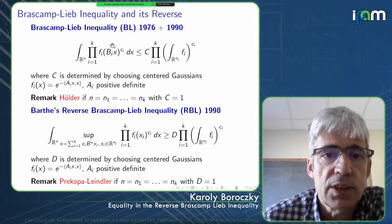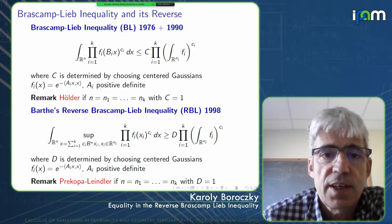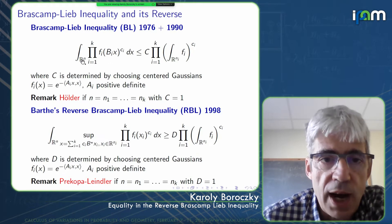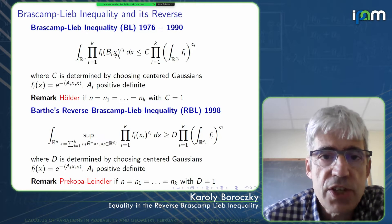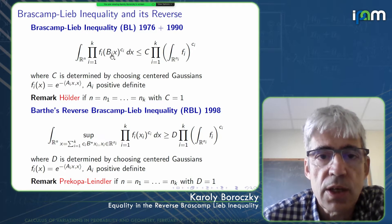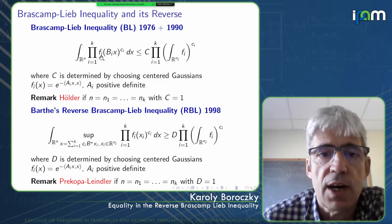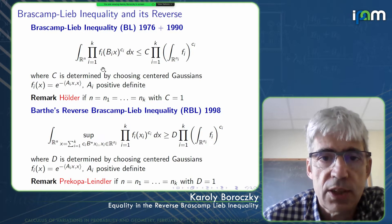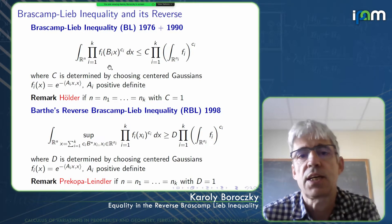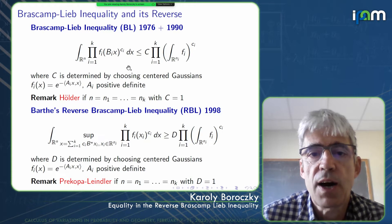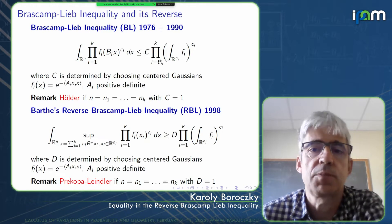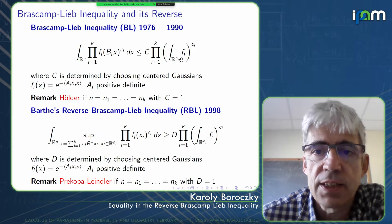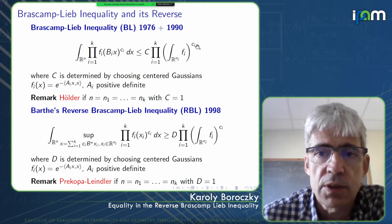The Brascamp-Lieb inequality I am talking about is a generalization of Hölder: on R^n, for each x you take the linear map B_i, evaluate the function f_i defined on R^{n_i} at B_i(x), raise it to the power c_i, and take the product of all these expressions. This integral is bounded above by a certain constant times the product of the integrals of f_i to the power c_i.